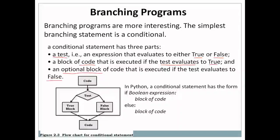Look at the flowchart of the conditional statement. We have a test condition — for example, if a is greater than b. This is a conditional test that evaluates to either true or false. If the test is true, the true block is executed; if it is false, the false block is executed.